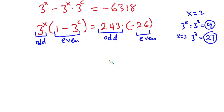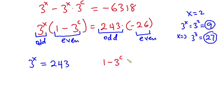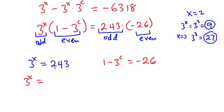Comparing odd to odd and even to even, we can say 3 to the power x equals 243 and 1 minus 3 to the power c equals negative 26. Solving the first: 3 to the power x equals 243, which is the same as 3 to the power 5. Since the bases are the same, we equate the exponents, giving x equals 5.